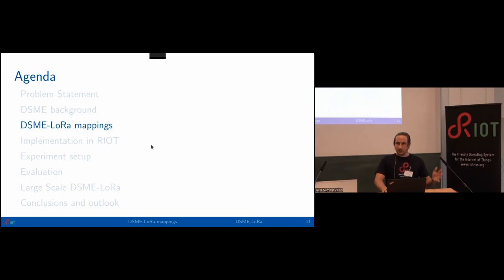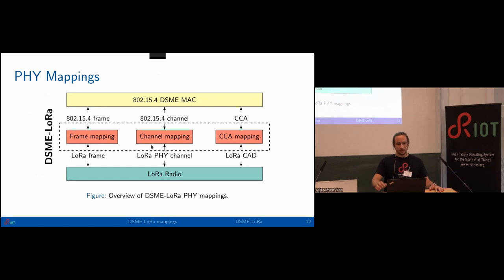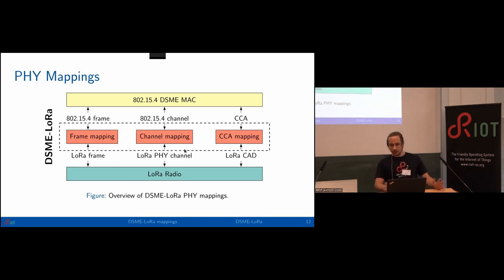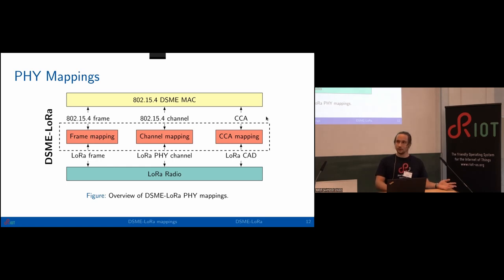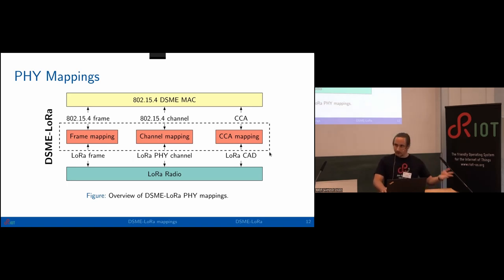Now the DSME LoRa mappings — how we can run DSME on top of LoRa. We essentially need two things. For the PHY mapping, we transmit the full 15.4 frame into the PHY payload of LoRa. We map the 15.4 channels to a definition of LoRa channels — since LoRa channels don't natively exist, we define 16 channels using typical LoRaWAN settings. For CSMA-CA, clear channel assessment is not natively supported by LoRa, so we map it to channel activity detection, a feature common in all LoRa radios used for detecting LoRa preambles, which can also detect the presence of a LoRa packet.